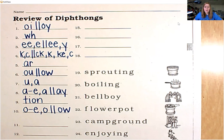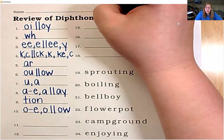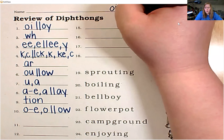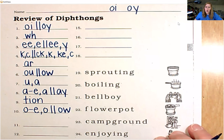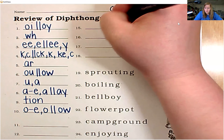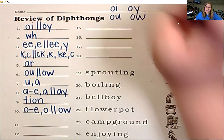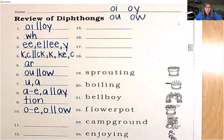All right, we are going to practice spelling words with diphthongs. We know four diphthongs: O-I and O-Y say oy; O-U and O-W say ow. We are going to spell the words and then put an arc underneath the diphthongs, since that is how we code them.